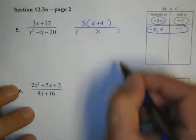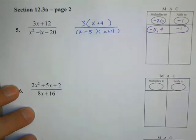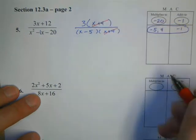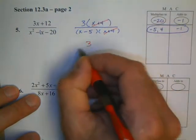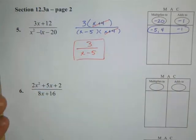So I'm going to replace the bottom with the factored answer of x minus 5 and x plus 4. Now that the problem is factored, we can cancel out factors, leaving us with an answer of 3 over x minus 5.